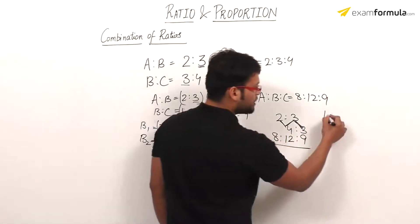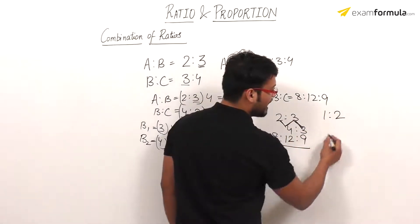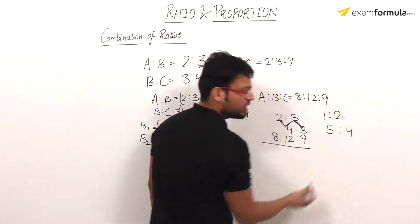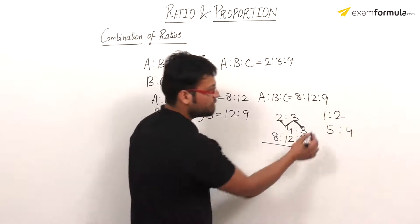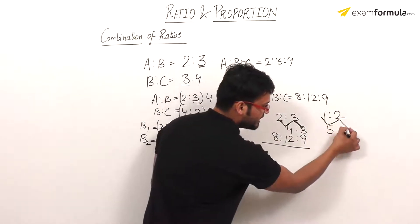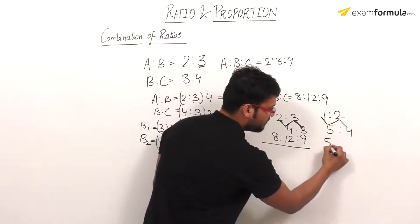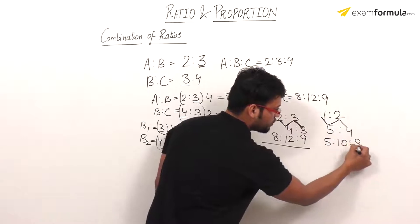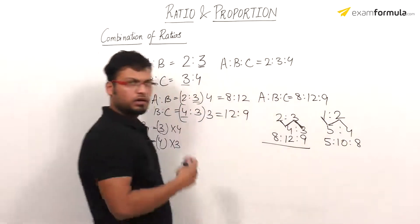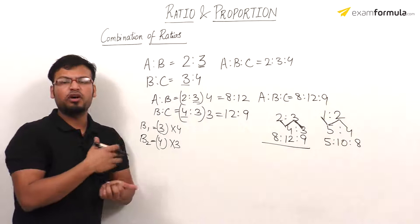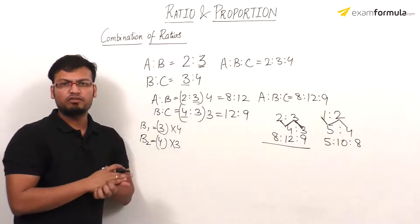Let me give another example. Suppose the ratios are 1 ratio 2 and 5 ratio 4. Using the same trick — multiply first terms, then the middle, then the last — we get 5 ratio 10 ratio 8. You can see that when you do these questions using the trick, it is quite time saving.